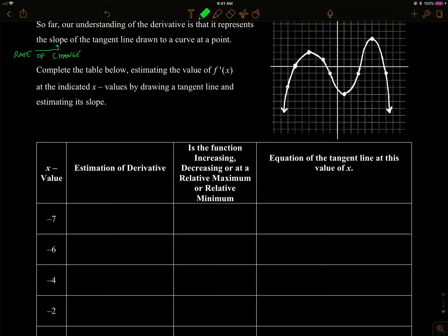What we're going to look at now is the graph of a function — we don't have the equation, but we have the graph. We're going to draw the tangent line at the given x value and estimate the derivative. At negative 7, we draw the tangent line with a ruler on an iPad — not bad. It looks like it crosses a nice corner point, going up four and over one, so the slope is about four. The derivative at negative seven is about four.